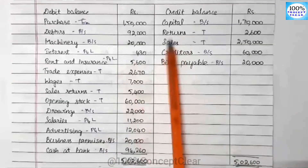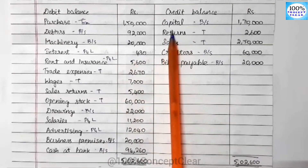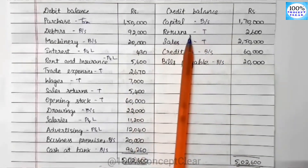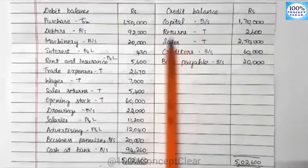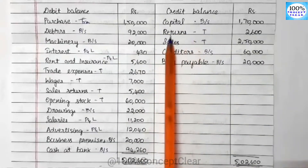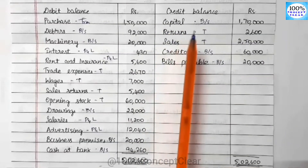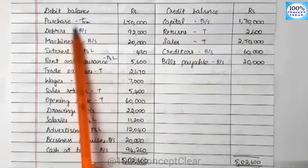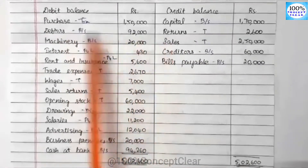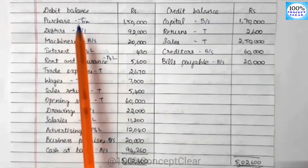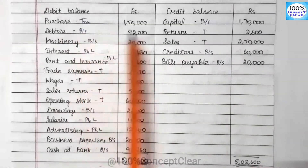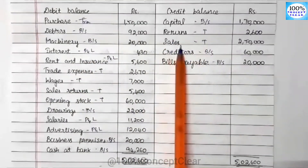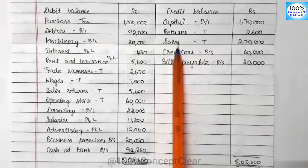Now look at credit sale. Credit sale is capital, so capital is a Balance Sheet item. There are returns — this is the purchase return. Because the purchase amount, we will go to debit side. If we minus the purchase return, we will minus the amount of credit sale. That means we credit the sales amount.